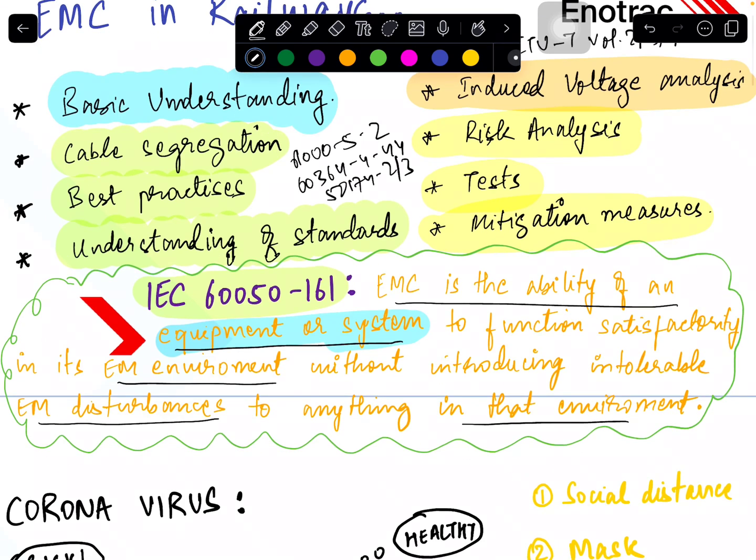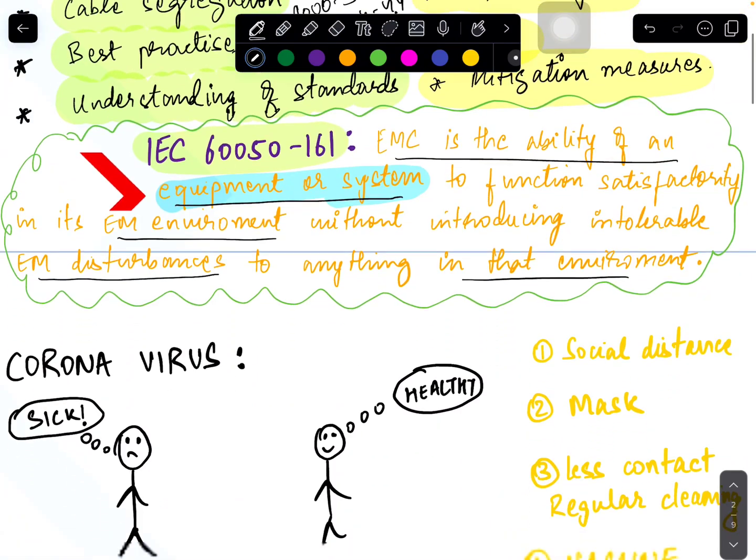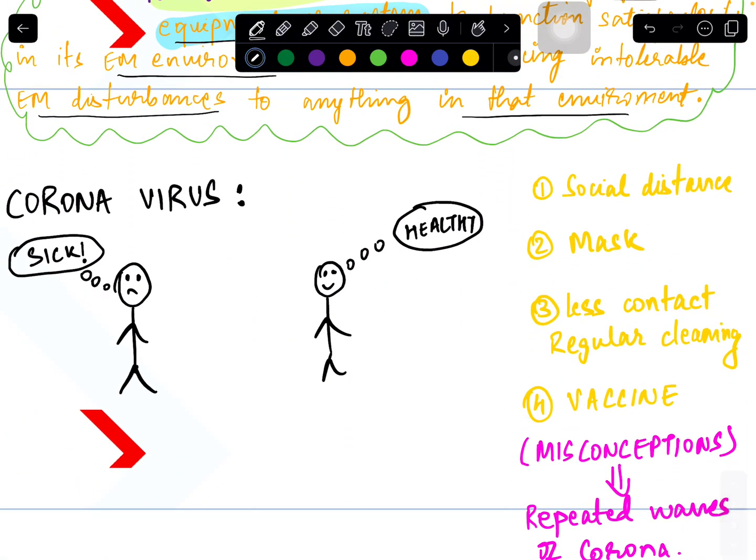So going back to the definition, EMC is the ability of an equipment or system to function satisfactorily in the electromagnetic environment without introducing intolerable electromagnetic disturbance to anything in that environment. Now this definition is a bit heavy, and we said that we will not go into deep technical. So let us take an example so that everyone can relate to what is EMC, and this example is of coronavirus. Yes, everybody knows now, in 2019 it started—COVID-19—and now everybody is aware of what it was and at least what mitigation measures had to be taken or what steps we followed in order to avoid getting it.